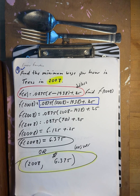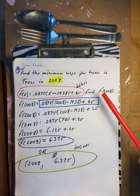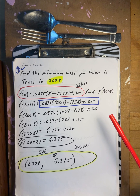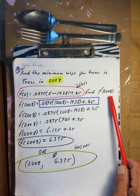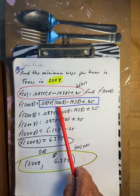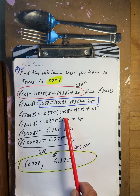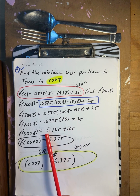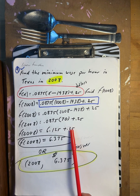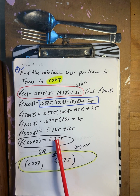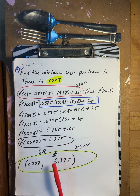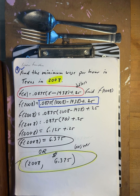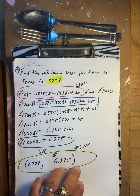Find the minimum wage per hour in Texas in 2008. f of 2008: 2008 minus 1938 gives 70. 70 times the coefficient gives 6.125, plus 0.25 gives 6.375. So in 2008, the minimum wage was $6.375 per hour.